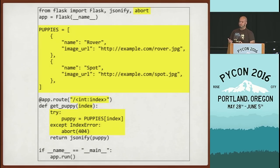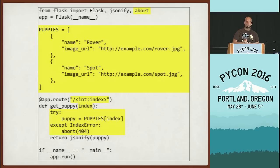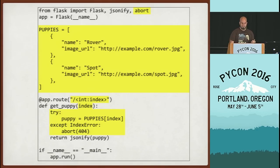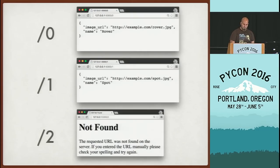Now we have a data structure that defines multiple puppies in our code base — a list of puppies with two entries. We've changed the URL route so that when you visit this API, you have to specify an index into this list. You'd visit puppyapi.com/1 or puppyapi.com/15, and it's going to index into that list and find the puppy using the JSONify method. If it can't find it, it returns a 404. Go to slash 0 and you get Rover, slash 1 and you get Spot.